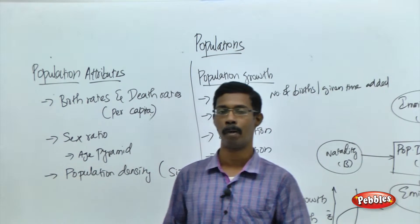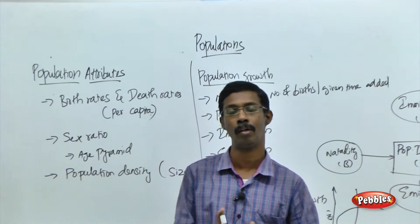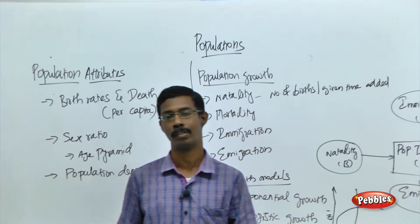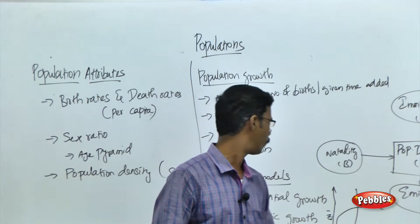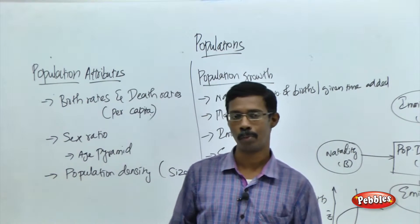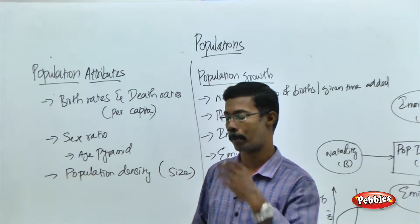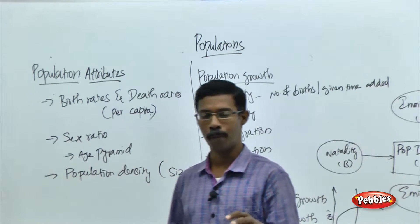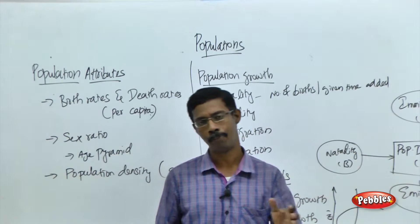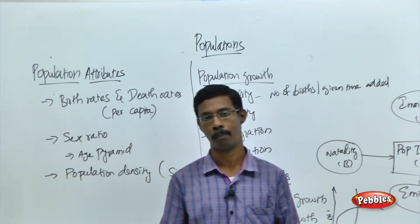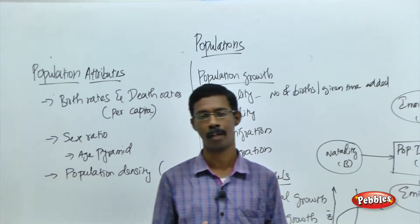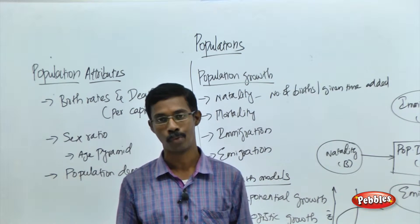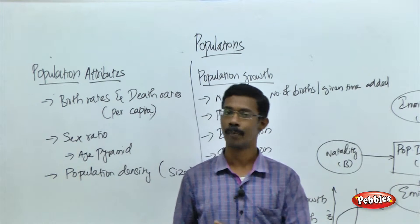What are all the terms related with the particular population? We are going to see some models of population and how a particular population will grow. We will start with the population attributes. Whenever we are talking about an individual, we can say birth and death. But while we are talking about the population — a group of individuals, not a single person — we have to use the term birth rate and death rate.